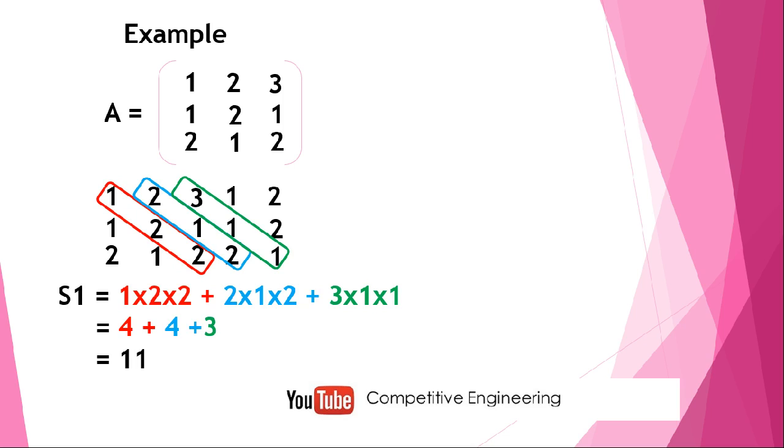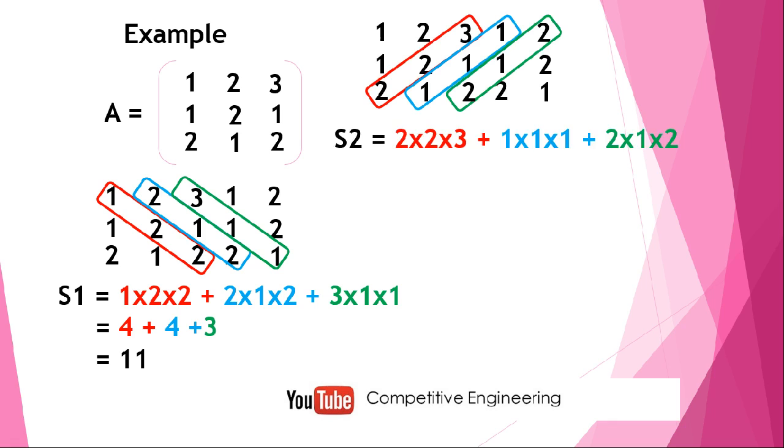Next step, we will mark the right diagonal and do the same process. I'll mark the right diagonals which have at least three elements: this is the first one, second one, and third one. Then multiplying each element in the diagonal and finding their sum: 2×2×3 plus 1×1×1 plus 2×1×2. That gives us 17, so S2 equals 17.